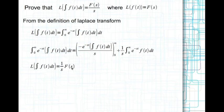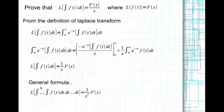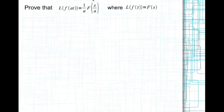In general, if we integrate a function f(t) n times, then the Laplace transform of that n-times integrated function is 1 divided by s to the power of n, times F(s).